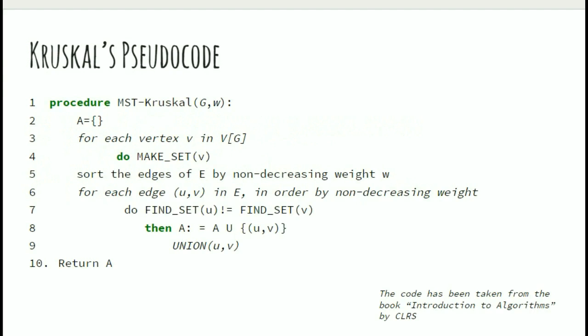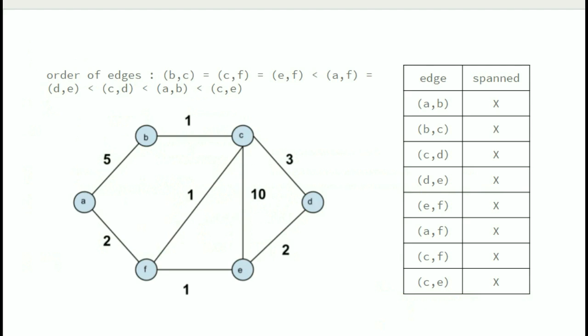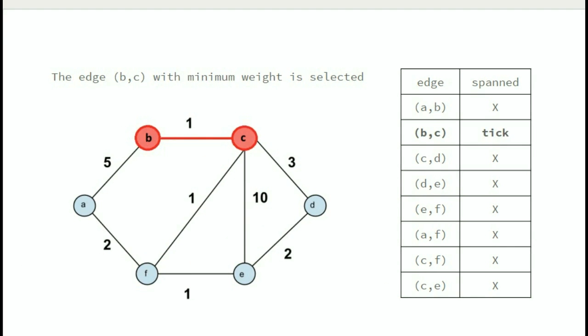Here is the pseudocode for Kruskal's algorithm taken from CLRS. Let us visualize with an example. We start with graph G and take into account their weights in sorted order. After sorting the edges of the graph, we choose edge BC which has the minimum weight and add it to our MST. We also mark vertices B and C as visited.